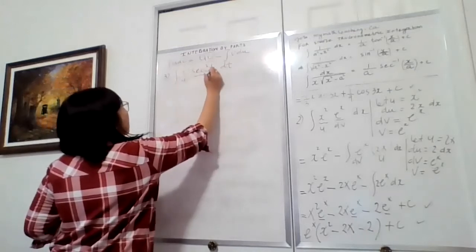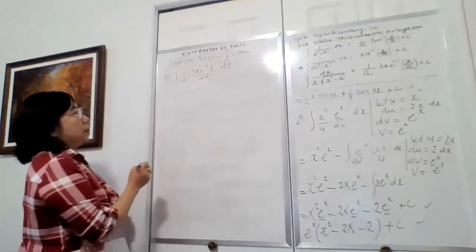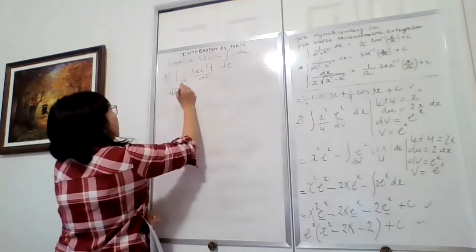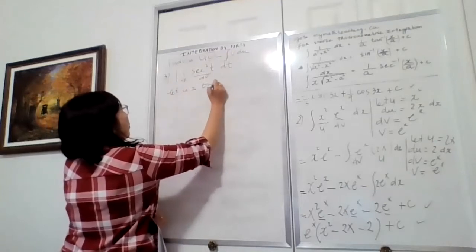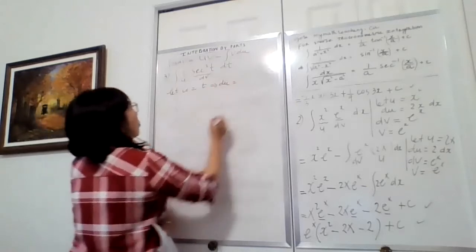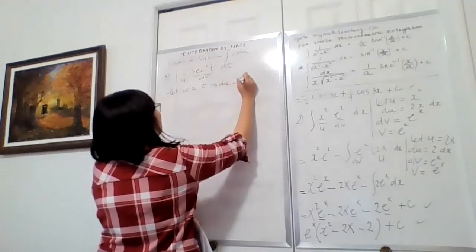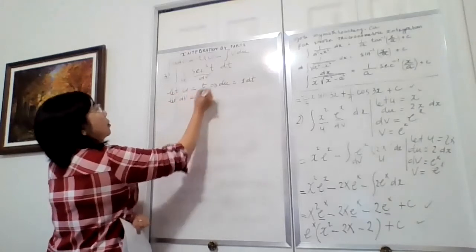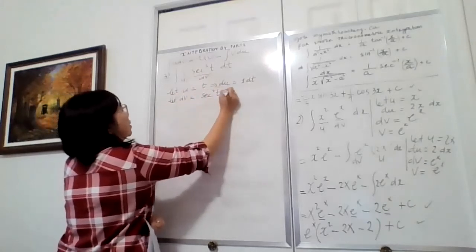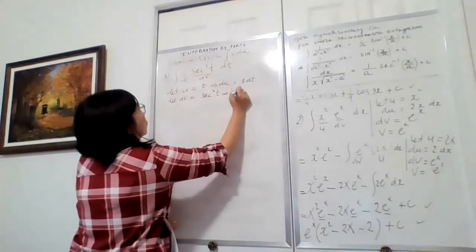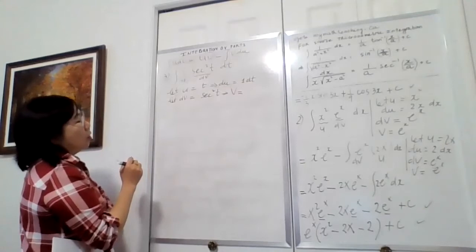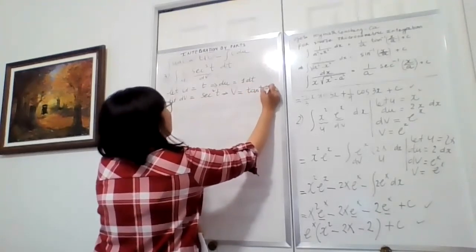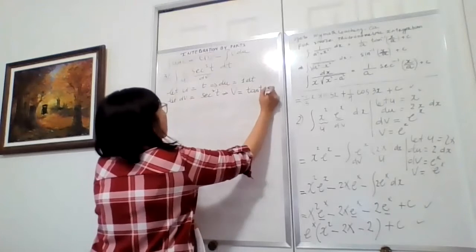So I'm going to say let u equal t. And let dv equal sec²(t). Then v will equal the anti-derivative of sec²(t), which is tan(t). So v equals tan(t).